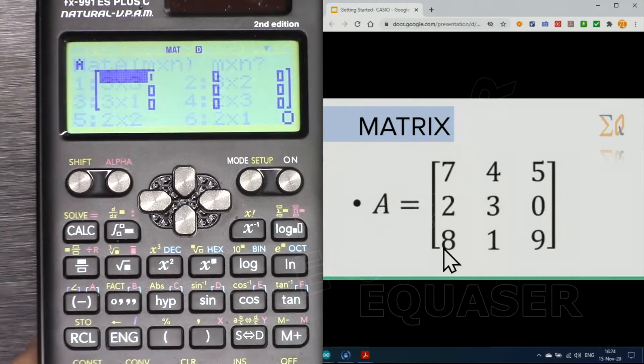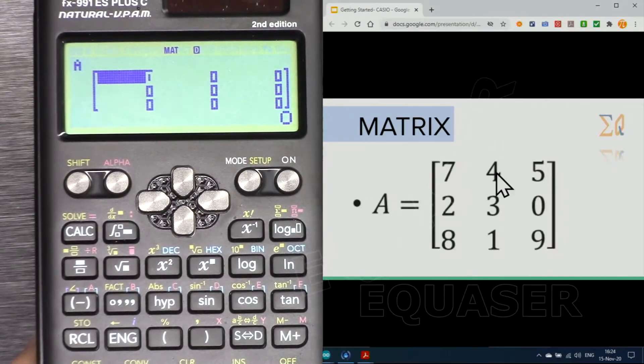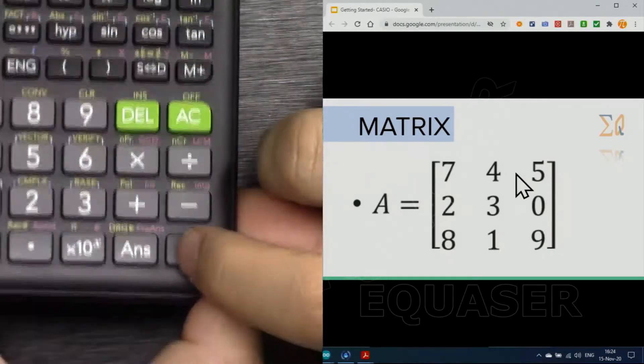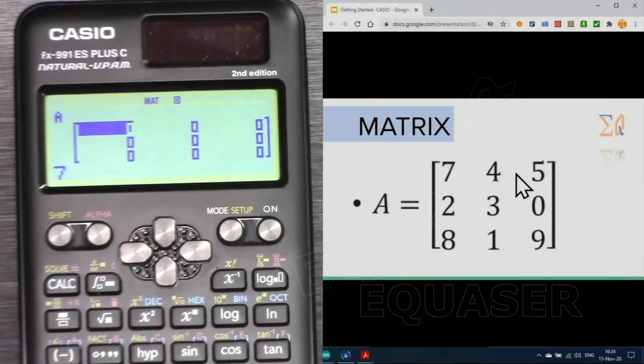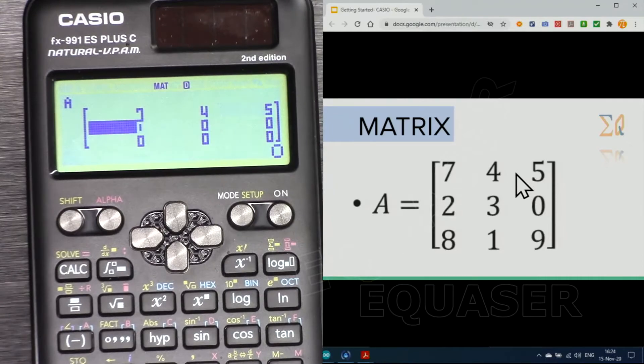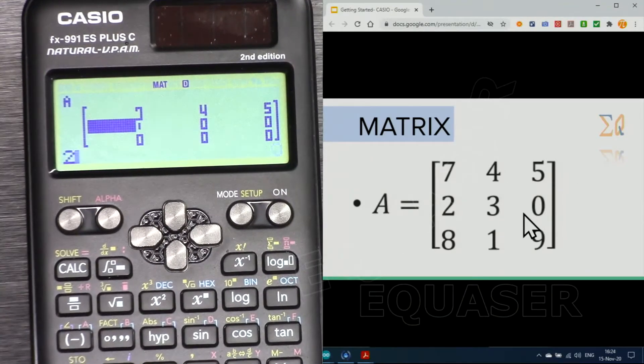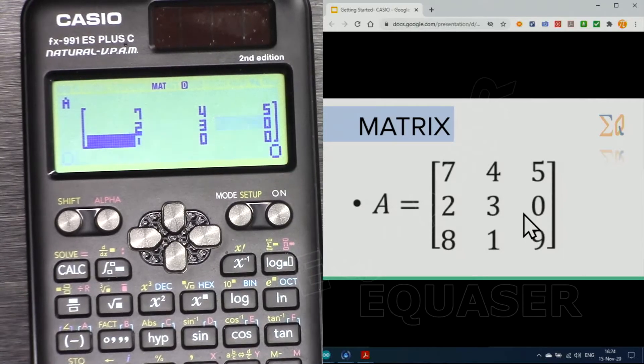I'm pressing 1 and here it asks for the value: 745. I'm pressing 7 and then equal, 4 equal, 5 equal, and it moves to the next row. Now 2, 3, 0: 2 equal, 3 equal, 0 equal.